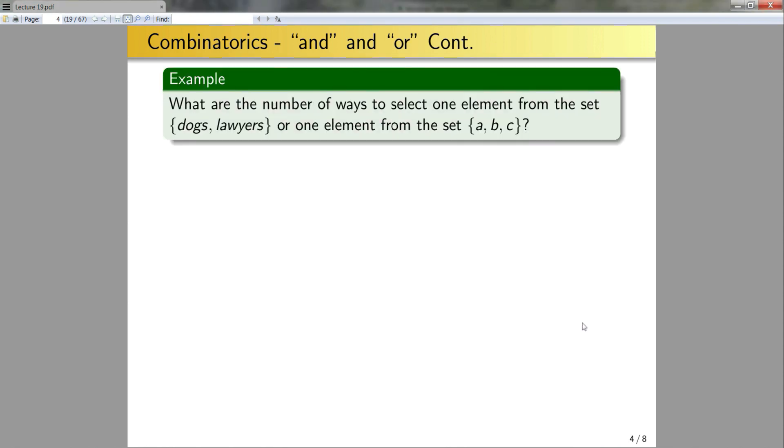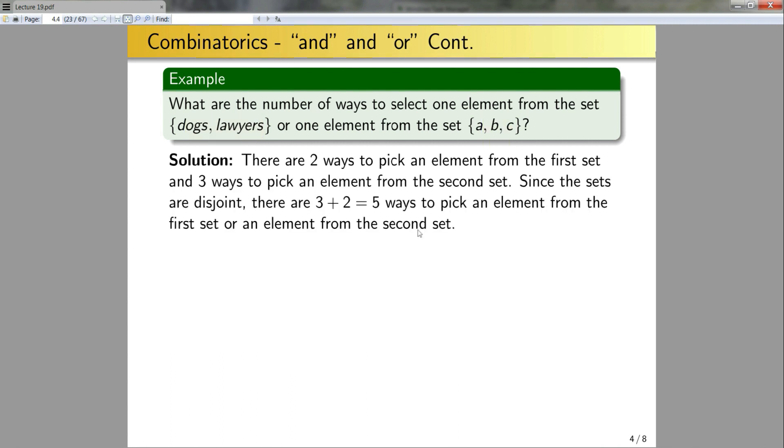Now let's look at an example. What are the number of ways to select one element from this set or one element from this set? Let's look at each of these sets individually. There's two ways to select an element from the first set, and there's three ways to select an element from the second set. Since these sets are disjoint, since they don't have anything in common, there's 3 plus 2 equals 5 possible outcomes from picking an element from the first set or an element from the second set.